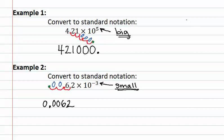The thing to keep in mind is that if we are moving a decimal to the right, it is because it is a very big number and our resulting answer should be large, such as the 421,000 we got in example one. If the exponent is negative, we know we should have a very small number. Moving the decimal to the left resulted in 0.0062.